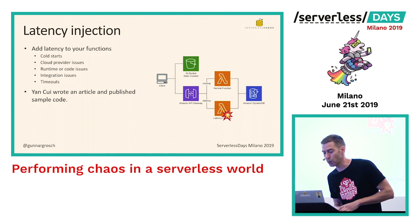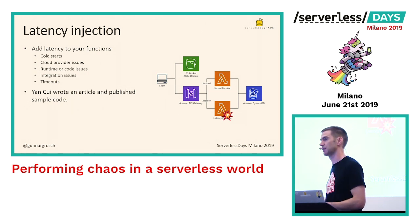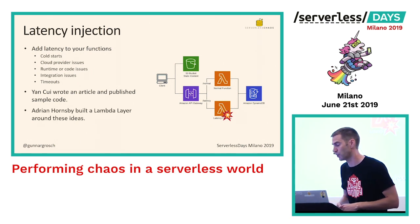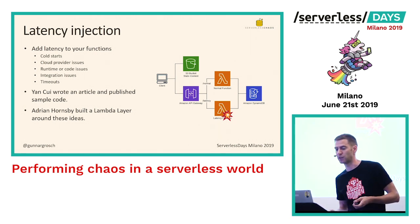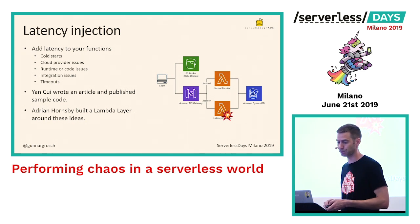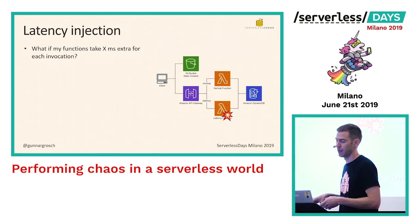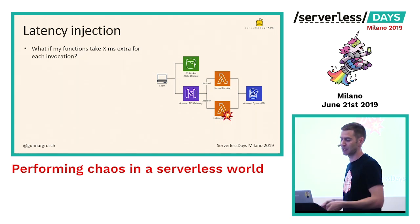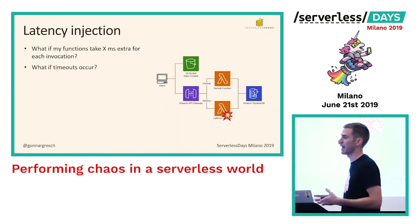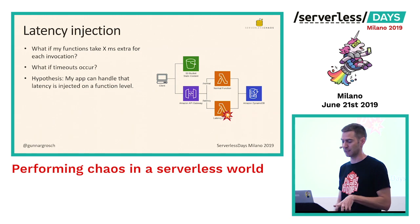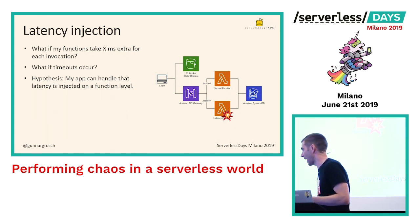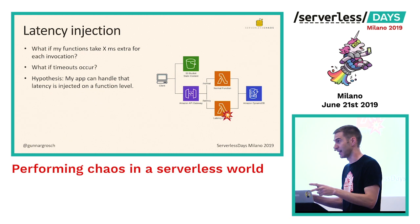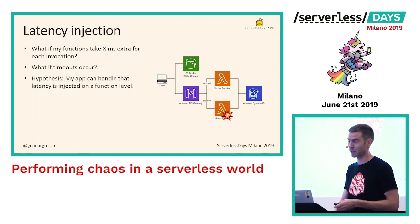Jan Kui wrote an article on this a while back and published some sample code that has been used by many since. Adrian Hornsby from AWS built a Lambda layer using those ideas, which is publicly available to test with — and that's what we're going to use now. Going back to the hypothesis: what if my function takes X milliseconds extra for each invocation? What if timeouts occur? The hypothesis is: my app can handle latency injected at the function level. I can be honest and say I don't think it will — but let's not tell anyone outside this room.